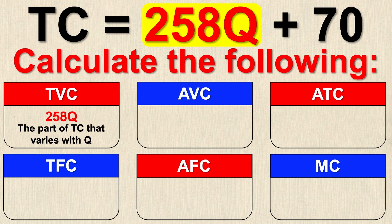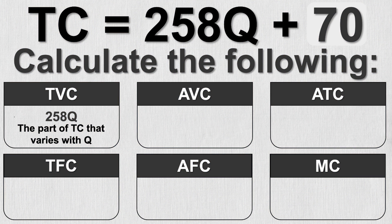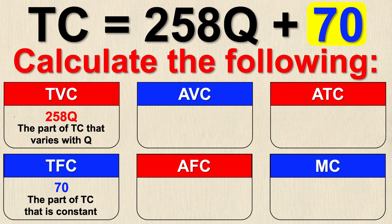Now you might be thinking that total fixed cost must be the part of the cost equation that's fixed — and you'd be right. The constant part is 70, and it doesn't change as Q goes up or down. So 70 is the part of the total cost that is constant, or not changing, hence fixed.